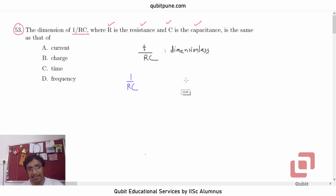If T by RC is dimensionless, then RC must have the dimension of time. So what should be the dimension of 1 upon RC? The dimensions of 1 upon RC should be 1 upon T. So it's definitely not current, not charge, not time, but frequency.